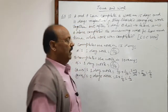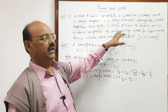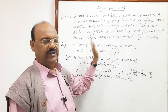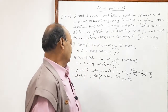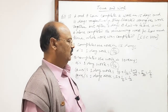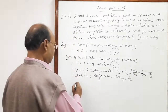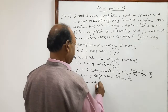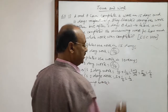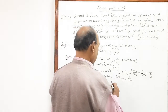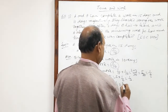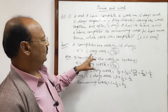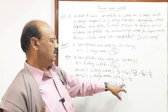Two times 1/6 is equal to 1/3. The remaining work has been completed by A only, as A continued doing the job. So the remaining work is 1 minus 1/3, which equals 2/3. We have A's one day work as 1/15 and the remaining work is 2/3.